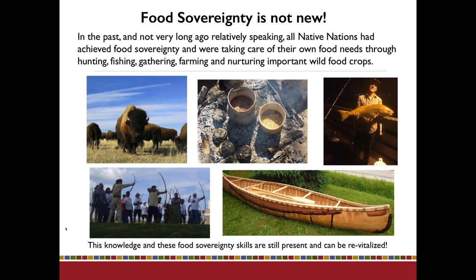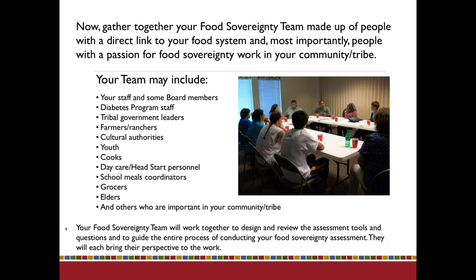These pictures illustrate some of the tools and methods still going on today. They symbolize food procurement. The best way to start your work of looking at food sovereignty is to localize the situation — look at the knowledge and food sovereignty skills that have been present in your community in a historical context. We're going to talk about that more in a minute.